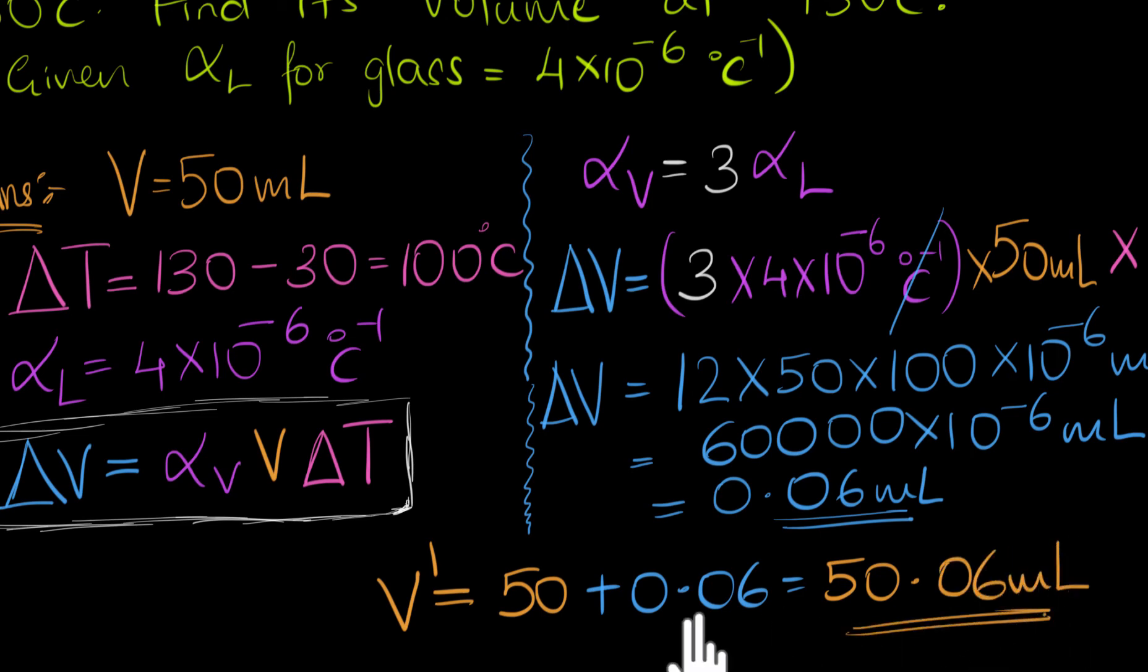And notice the volume change is extremely tiny. And so we can justify that alpha V equals 3 times alpha L. You can only use this when the changes are very tiny, which is the case in this particular scenario.